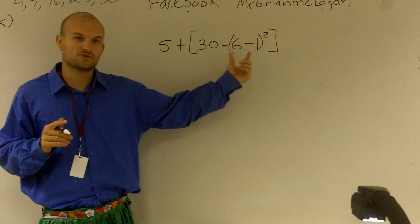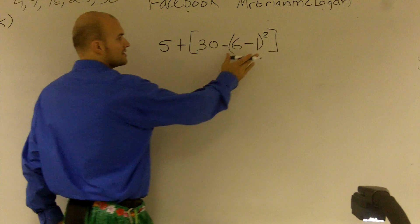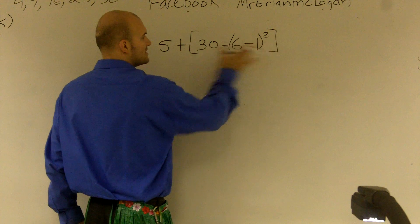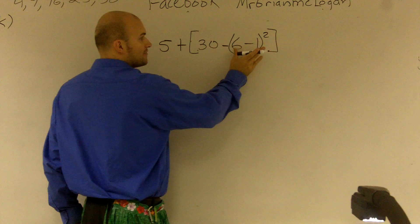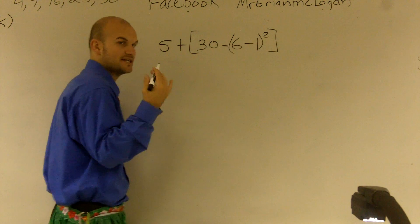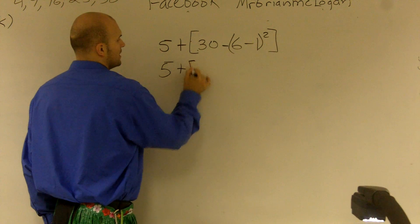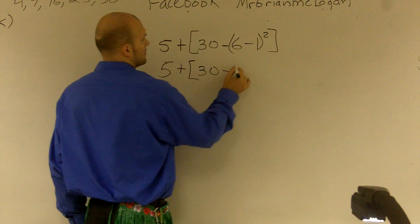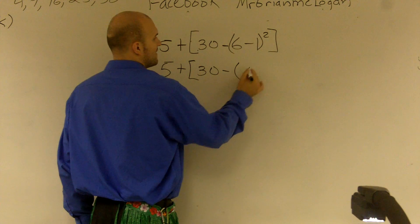You always want to work on the innermost parentheses first. Inside this parentheses, I have another set of parentheses with 6 minus 1. So that's what I'm going to do first. 6 minus 1 is going to leave me 5.